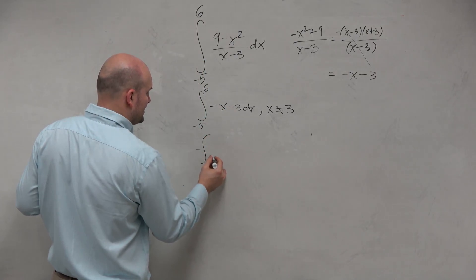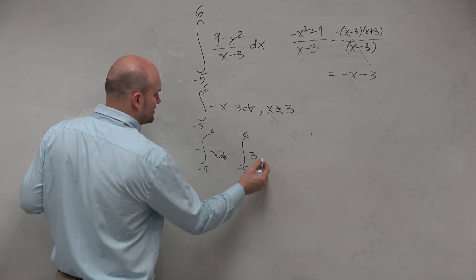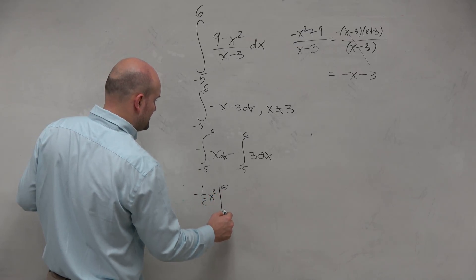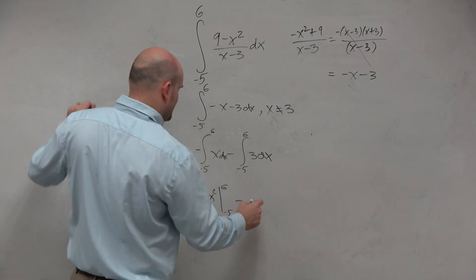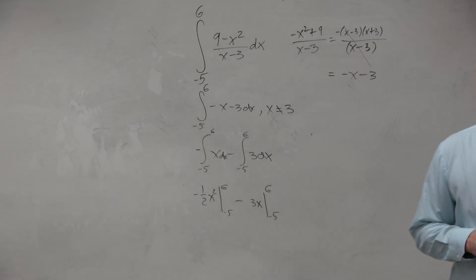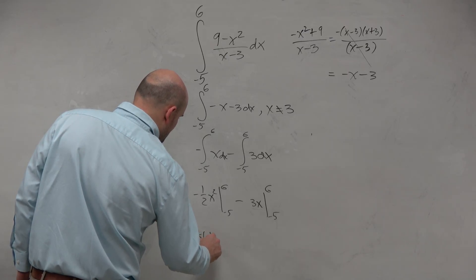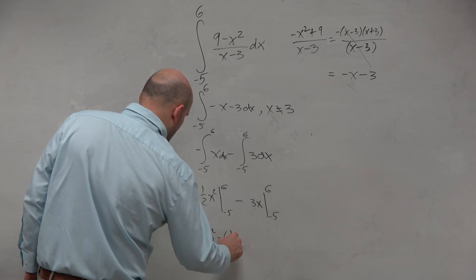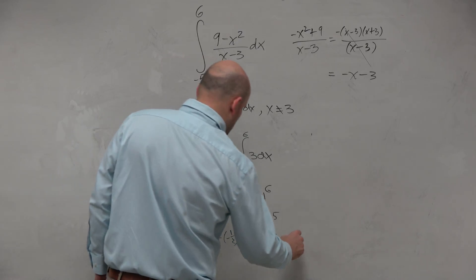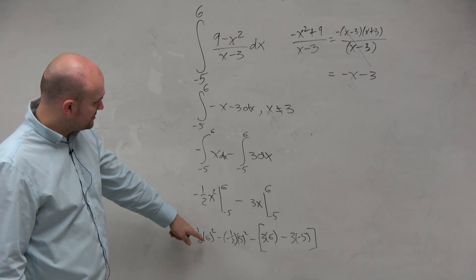So I can rewrite this as the integral from negative 5 to 6 of negative x minus 3 dx. Now we can just go ahead and integrate. So I have negative one-half x squared from 6 to negative 5, minus 3x from 6 to negative 5. Then just go ahead and apply this: negative one-half times 6 squared minus negative one-half times 5 squared, minus 3 times 6, minus 3 times negative 5.